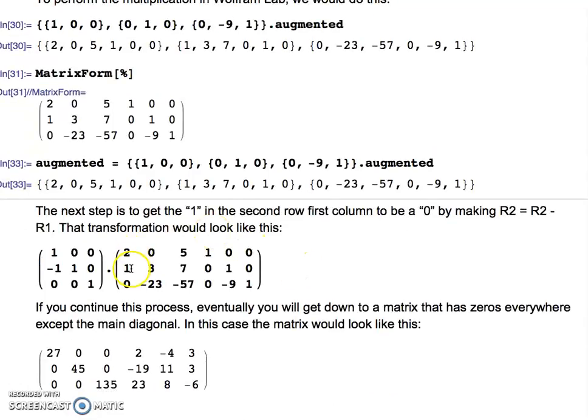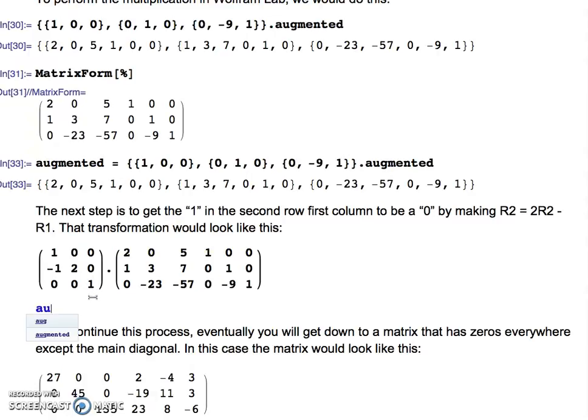The next step is to get a zero in the second row, in the first element where the one is. We know how to do that because we've done that before. Row two would be two row twos minus a row one. That would then get us the next step. If I wanted to do that step, I could say augmented equals, again, curly brace...